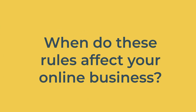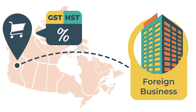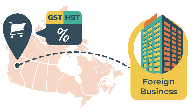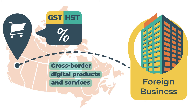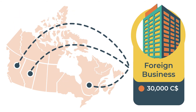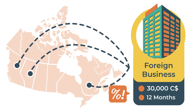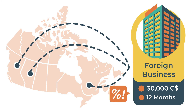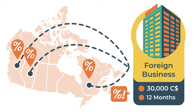When do these rules affect your online business? Canada's GST and HST apply to digital goods and services sold by foreign businesses. These sales are referred to as cross-border digital products and services. If your business expects to sell over $30,000 Canadian dollars to Canadian customers during a 12-month period, then you are required to register, collect, and remit GST and HST. So you need to track your sales in each Canadian province where you sell to customers.